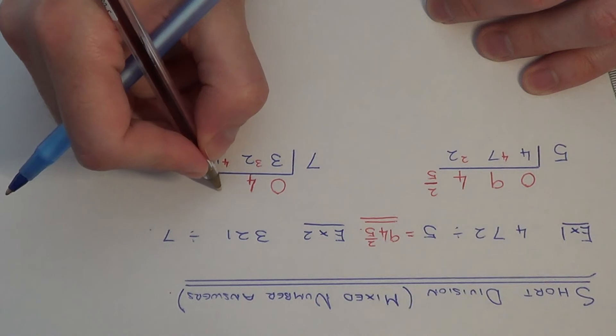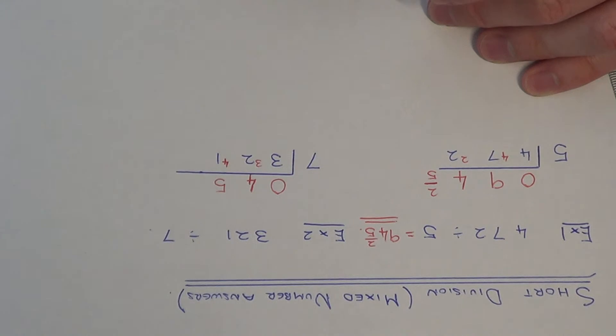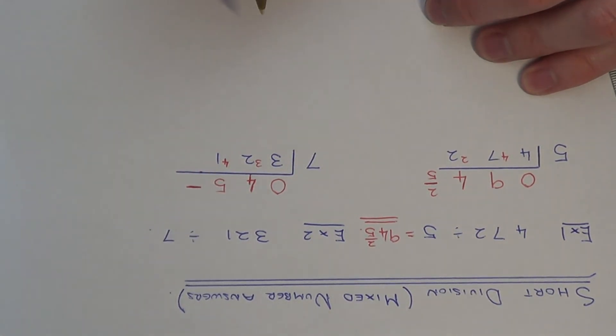So we put the 5 at the top. Again we're writing our answer as a mixed number. So we have a fraction at the end. The remainder on the last one was 6.